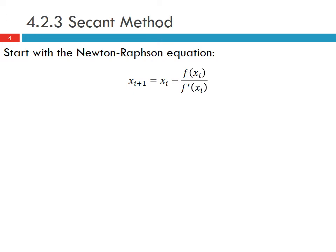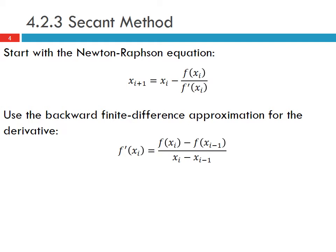We start with the Newton-Raphson equation where the next estimate of our root x_{i+1} equals the current estimate x_i minus f(x_i) divided by f'(x_i). Then we use the backward finite difference approximation for the derivative.